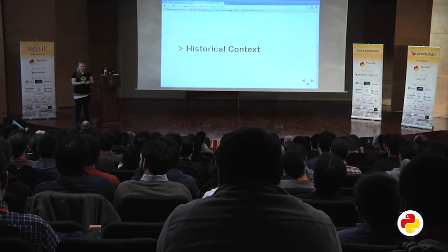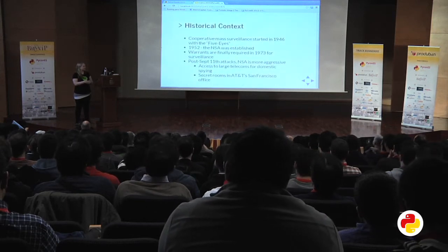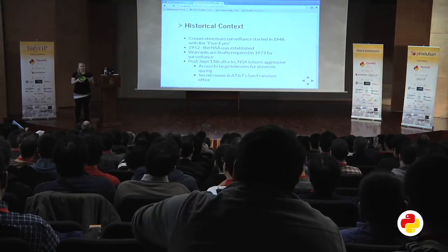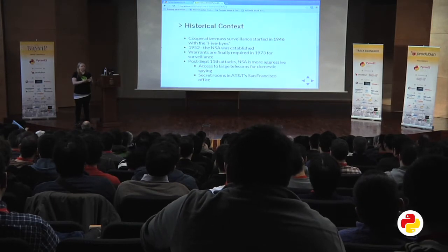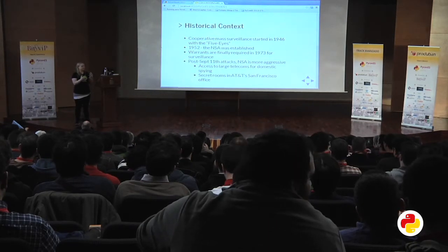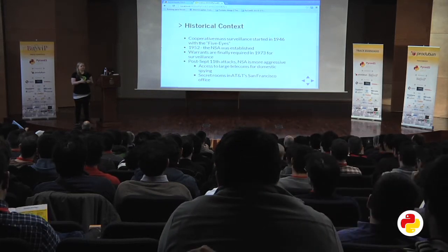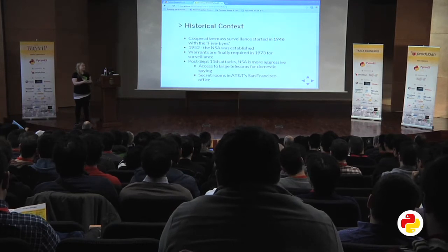We'll start with the historical context. Mass surveillance of the public has been going on since the beginning of the 20th century, with World War I and World War II. In 1946, a group was formed with the USA, UK, Australia, New Zealand, and Canada called the Five Eyes Group, where they would share information they found. In 1952, the National Security Agency was established, and then a little over 20 years later, Congress passed a bill saying that warrants are now actually required to spy on people.